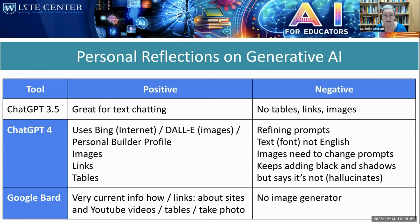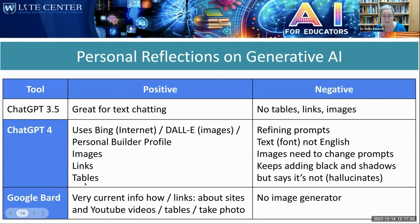It generates images, provides links to research articles, and it doesn't hallucinate — except for images and tables. What's negative for me about ChatGPT 4 are the images, because I keep having to add prompts. Even when I tell ChatGPT I don't want a black background, it says okay and then gives me black anyway. It seems ChatGPT will decide what it wants when it comes to images, even though you get great images overall.